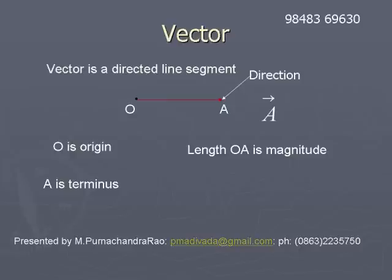There is an arrowhead at A. This arrowhead indicates that the direction of the vector is from O to A.